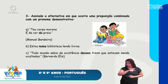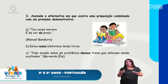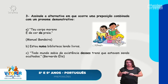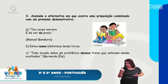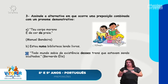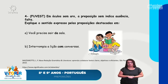A seguir, uma alternativa em que ocorre uma preposição combinada com o pronome demonstrativo — como 'esse', 'este', 'aquele'. Letra A: 'Teu corpo moreno é da cor da praia' — Manuel Bandeira. Esse 'da' tem 'de' mais o artigo 'a', não um pronome demonstrativo. Letra B: 'Estou numa biblioteca lendo livros' — 'num' é 'em' mais o artigo. Letra C: 'Todo mundo sabia da existência desses trens' — 'de' mais 'esses', combinando com pronome demonstrativo. Justamente a letra C.